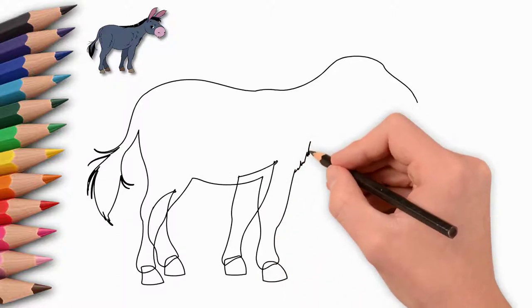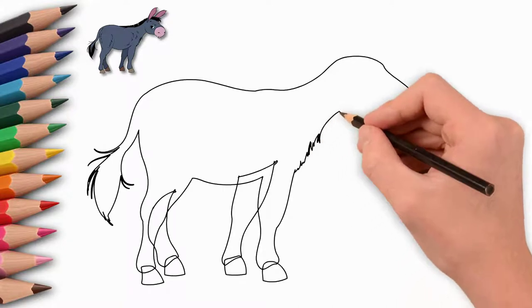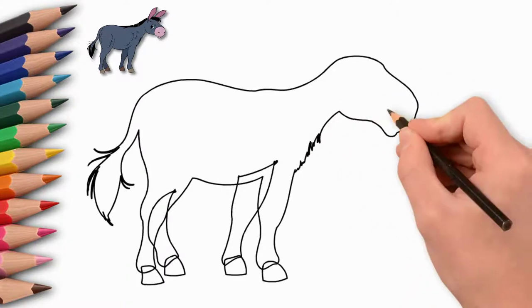We draw a tail. Now let's draw the legs in more detail. And now we draw the nostrils, we draw the donkey's mouth.